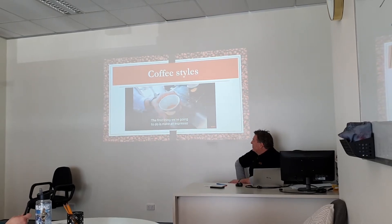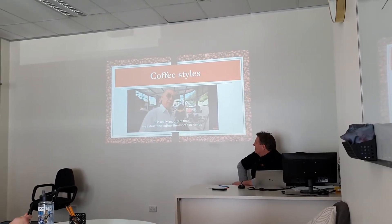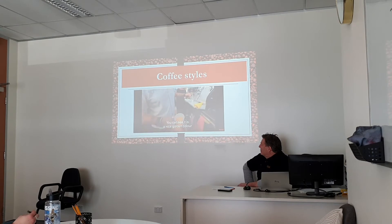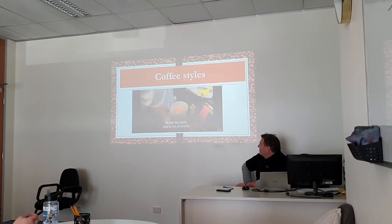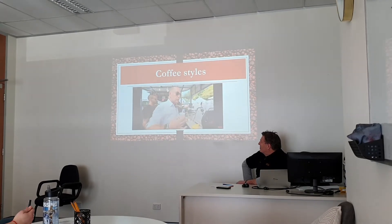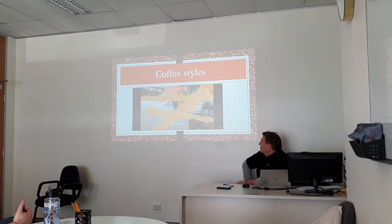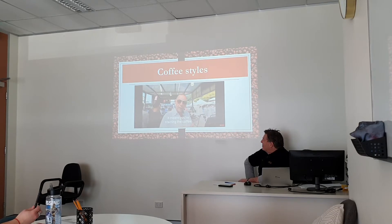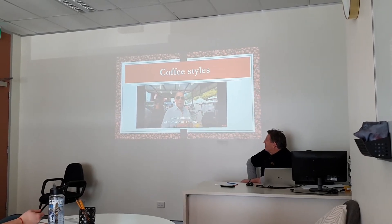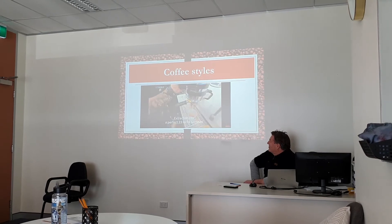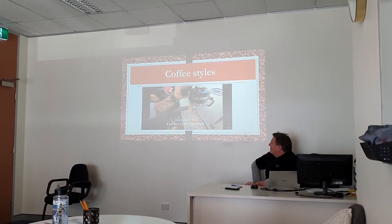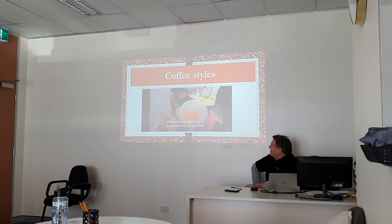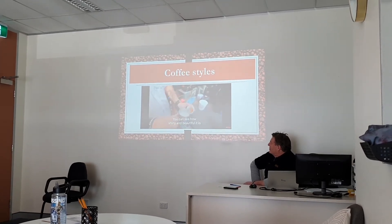First thing we're going to do is make an espresso — really important. How we extract the coffee. Espresso coffee. We're using a nice Lomar Zug Australia coffee machine. Nice golden colour. At the moment this is full of crema. This is our espresso — like mother's milk, liquid gold. If you don't add anything, you're staining the coffee. We're going to stain the espresso with a little bit of froth, a little crema. Extracting to a perfect 23–24 seconds. Our coffee needs this golden crema. Without this golden crema, your coffee is not a coffee.